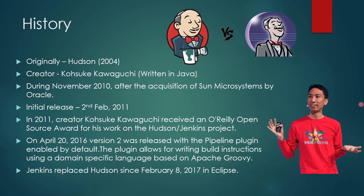In 2011, when the Oracle acquisition created these issues, creator Kosuke Kawaguchi released the initial version of Jenkins. He also received an open source award for his work on the Hudson/Jenkins project. On April 20th, 2016, version 2 was released with the pipeline plugin enabled by default. This plugin allows for writing build instructions using a domain-specific language, DSL. Jenkins replaced Hudson in Eclipse as well, effective February 8, 2017.